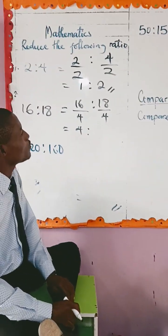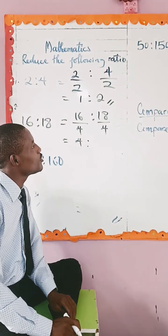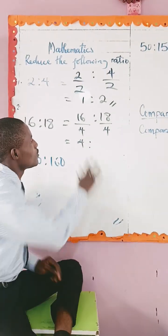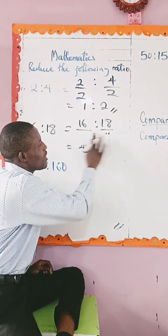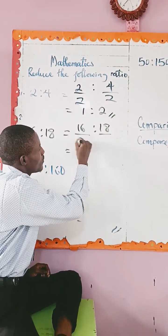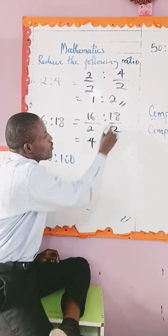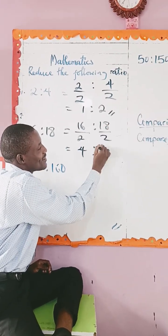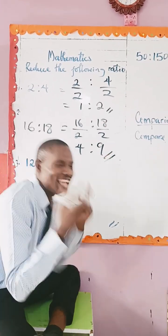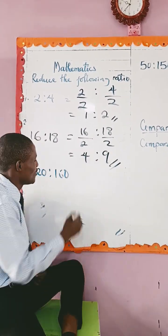So we can use two. Two goes into sixteen — that's eight. Two goes into eighteen — that's nine. Four goes into sixteen — that's four. Thank you.